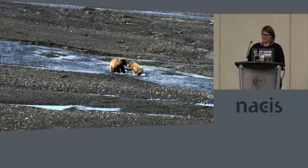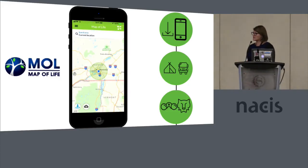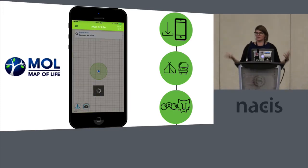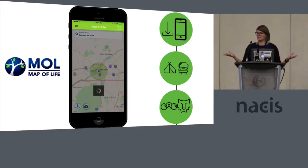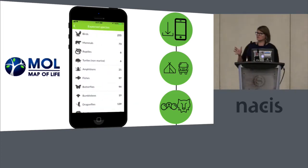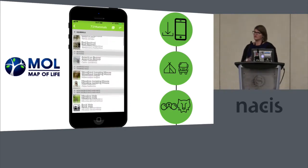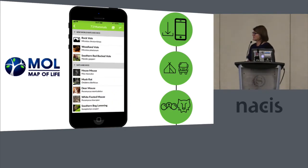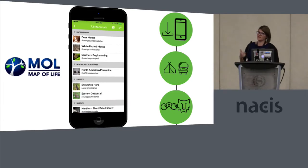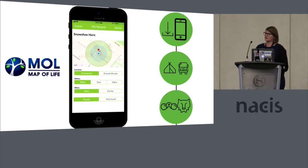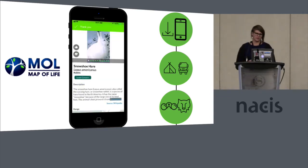We had folks use the Map of Life app, which is an app based out of Yale University. You can download it right now and use it here to record what plants, animals, mammals, or whatever you're seeing. When people would get to the park, they would download the app, and the app actually works offline in Denali. That was one of the things we were testing for the folks at Yale — the offline capabilities. You can use it offline in the park, when you're riding the buses, going camping and hiking. You just need to know what animal you are looking at.